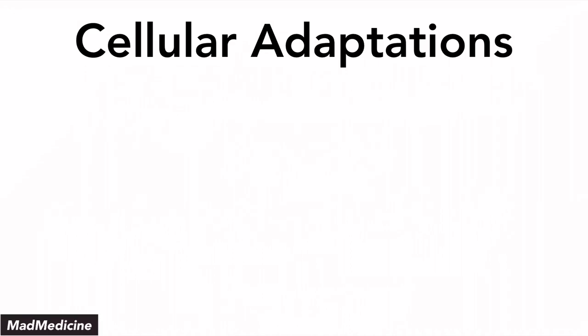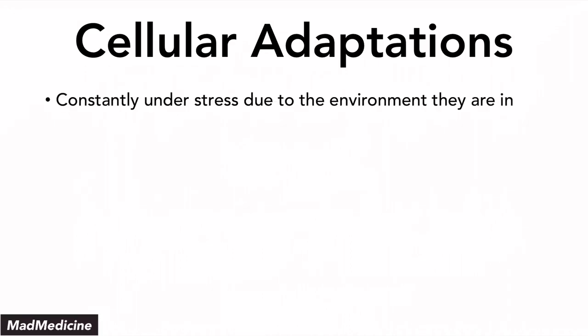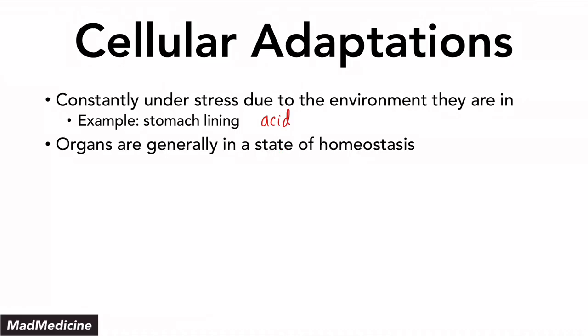One thing to remember is that the cells in our body are constantly under a lot of stress due to the environment they are in, and because of this stress, they're able to adapt. One example of a stressful environment is our stomach — the cells that make up the stomach lining are constantly being attacked by our acidic stomach contents, and because of that, the stomach lining is able to continuously regenerate even though it's being broken down all the time. Although cells are constantly stressed, our organs are generally in a state of homeostasis and are able to function properly.